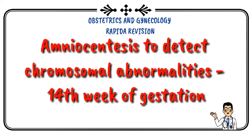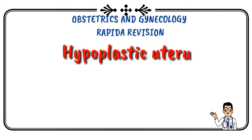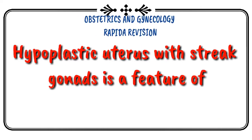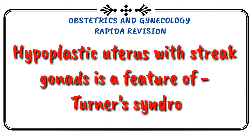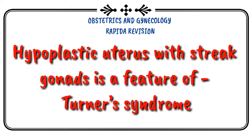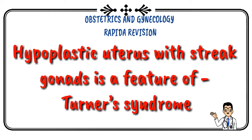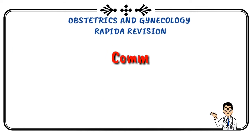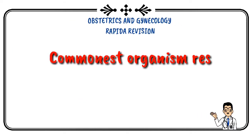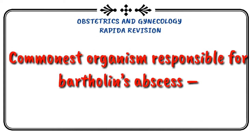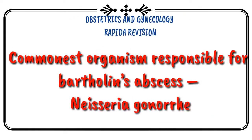Hypoplastic uterus with streak gonads is a feature of Turner syndrome. Commonest organism responsible for Bartholin's abscess is Neisseria gonorrhoeae.